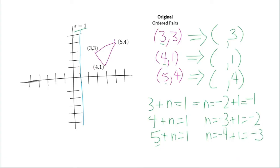So our new reflective ordered pairs are going to be (-1, 3), (-2, 1), and (-3, 4).